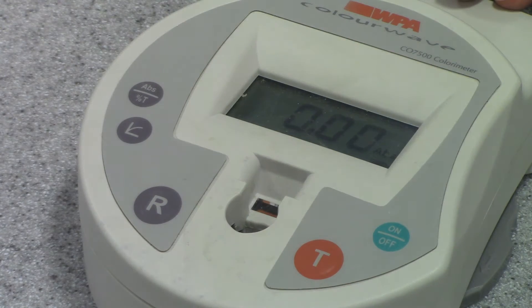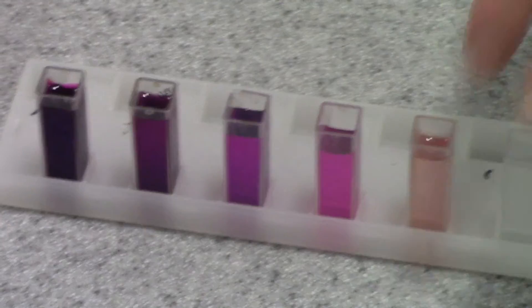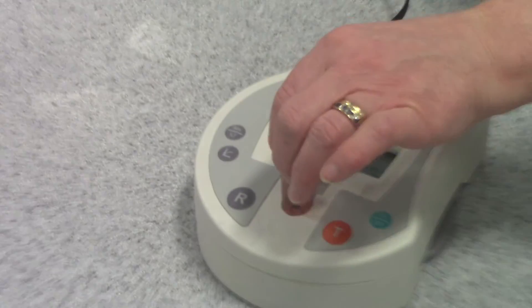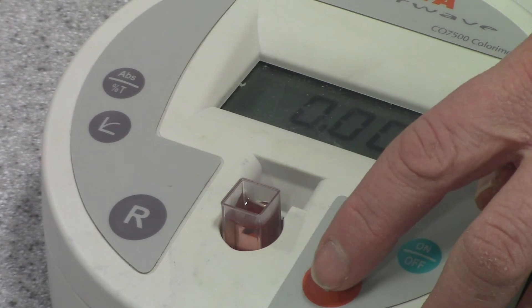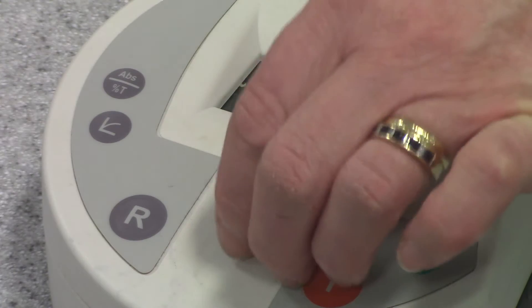I'm now going to prepare my calibration graph. So I've got a range of solutions of different concentrations. I'm going to take the first solution in my cuvette and I'm going to put it in and I'm going to press test this time. And this gives me an absorbance value, a numerical value that I can write down. I know the concentration of that solution and it's told me the absorbance.